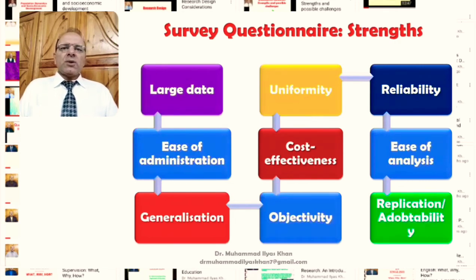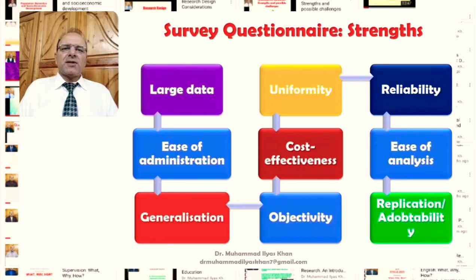The next strength is that the data we get through the questionnaire has the potential for generalization — mainly because of the uniformity of data, the uniformity of data analysis, and the uniformity of the results. Because of these, there is a greater chance that we can generalize on the basis of data and findings obtained through survey questionnaires.